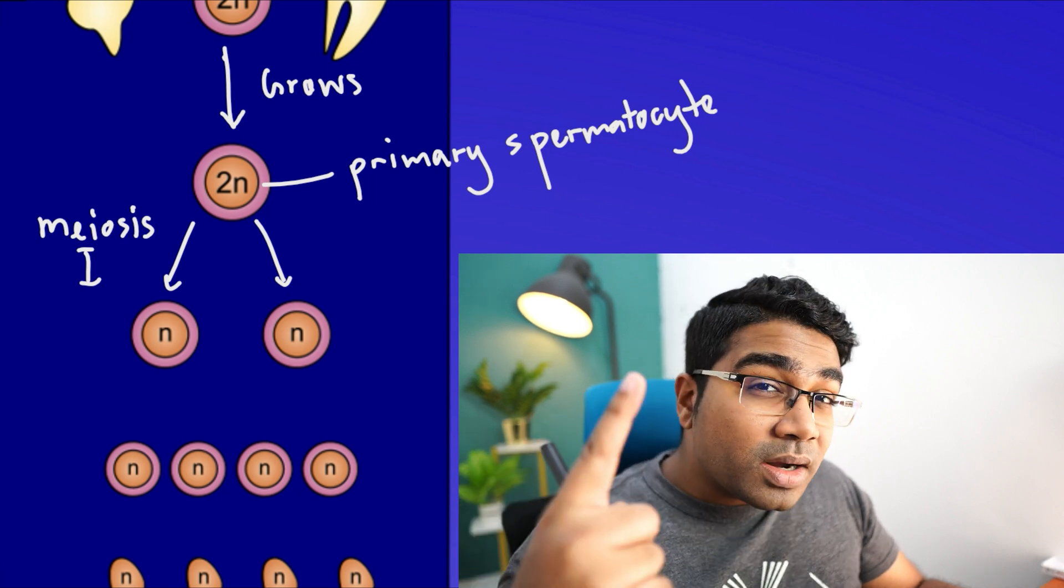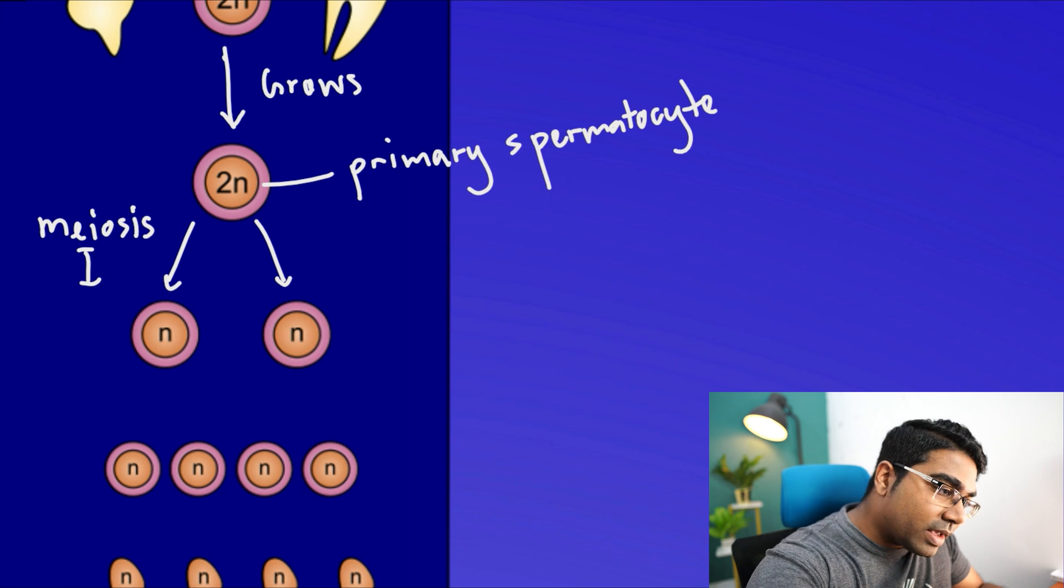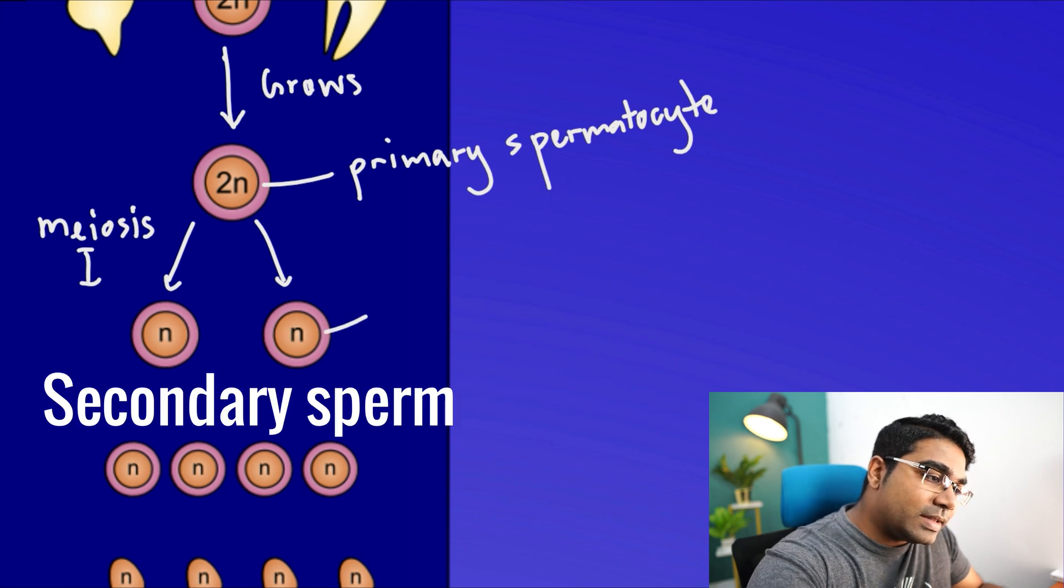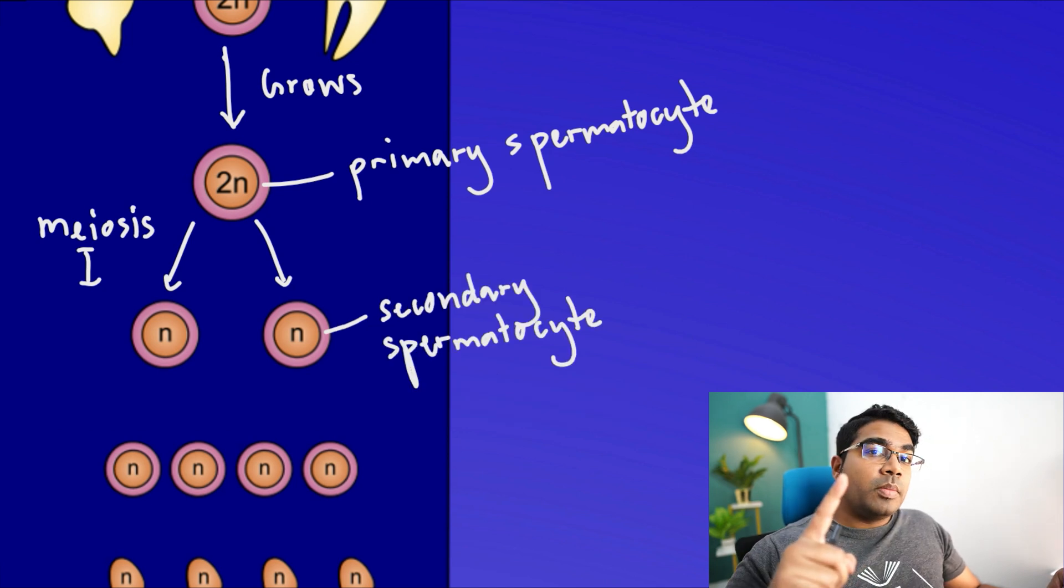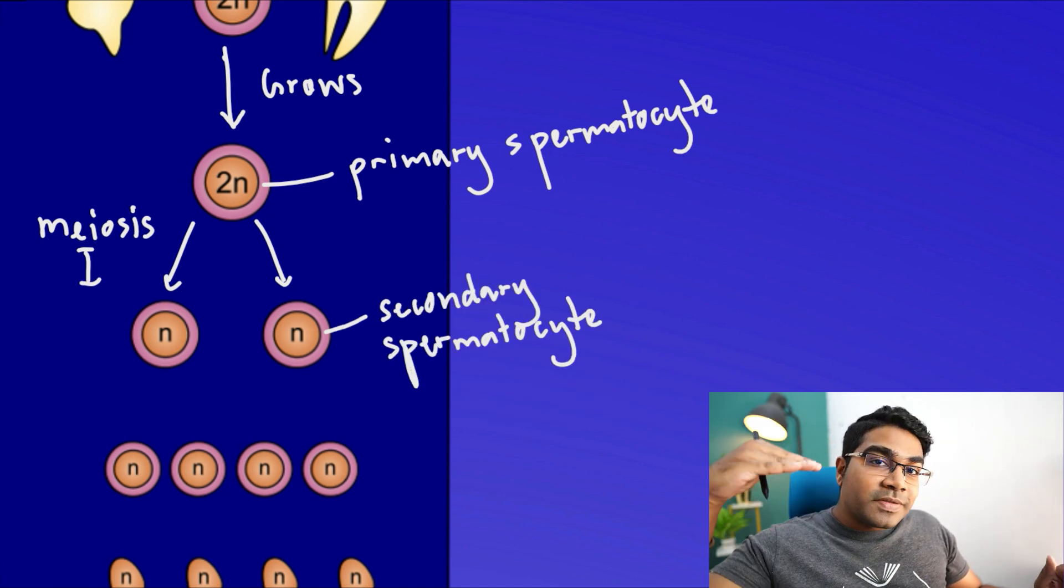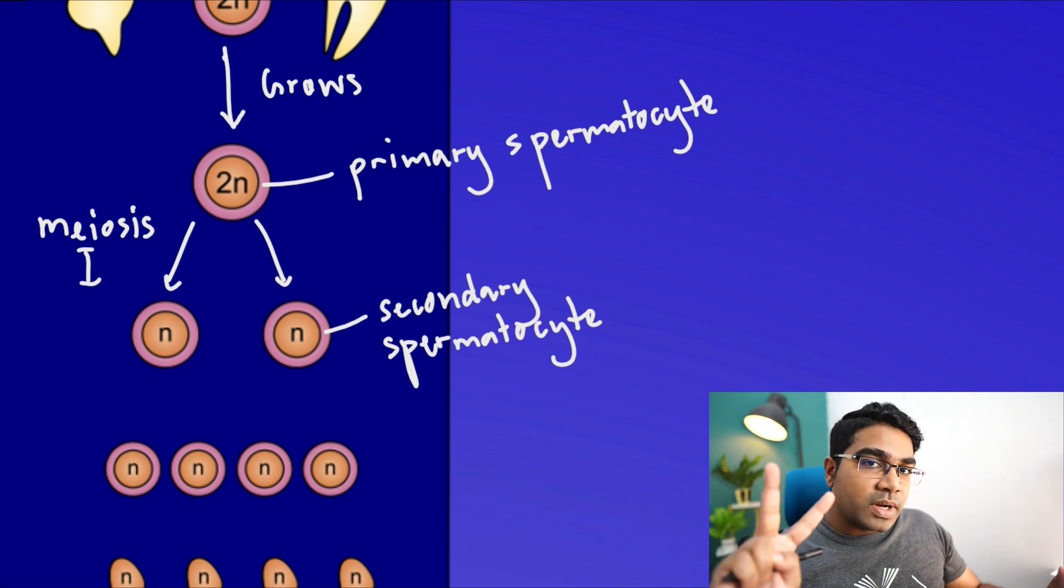The daughter cells now contain only one of each homologous chromosome pair, and these cells are known as the secondary spermatocytes. One spermatogonium produces one primary spermatocyte. After the first meiotic division, there are two secondary spermatocytes.